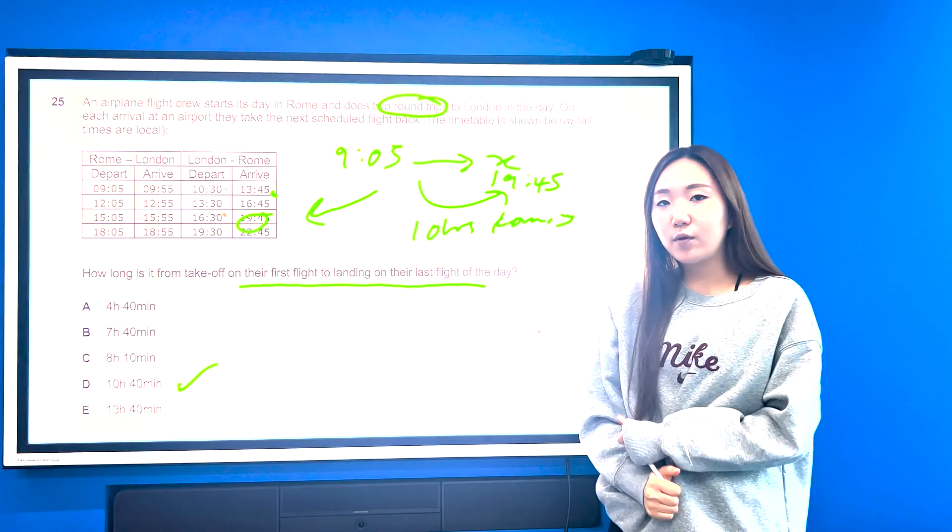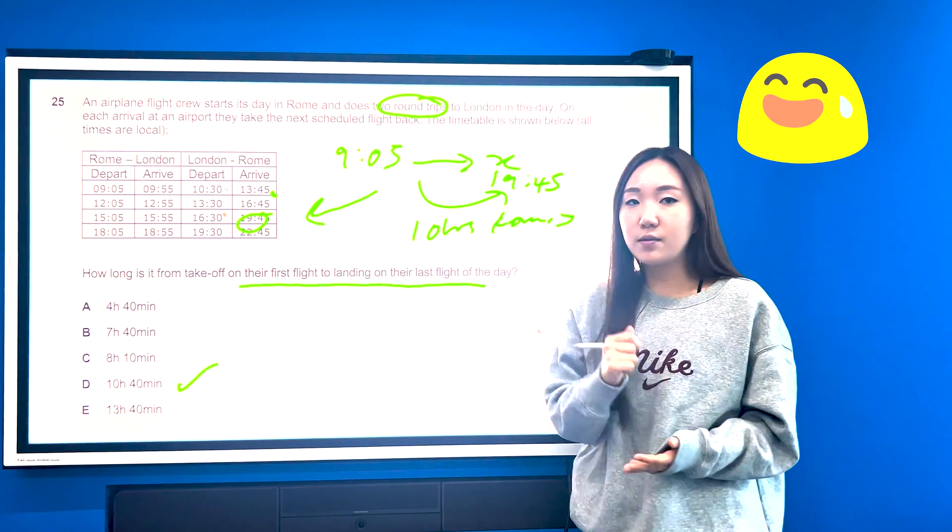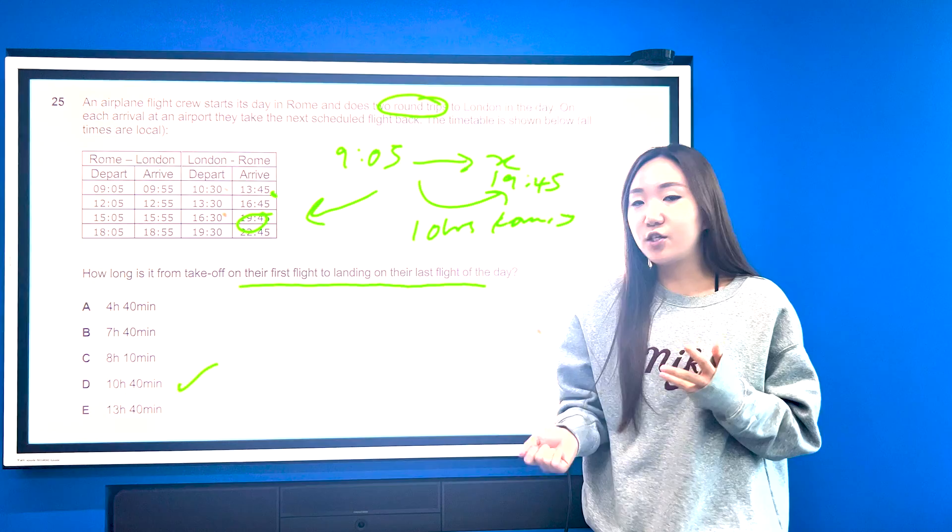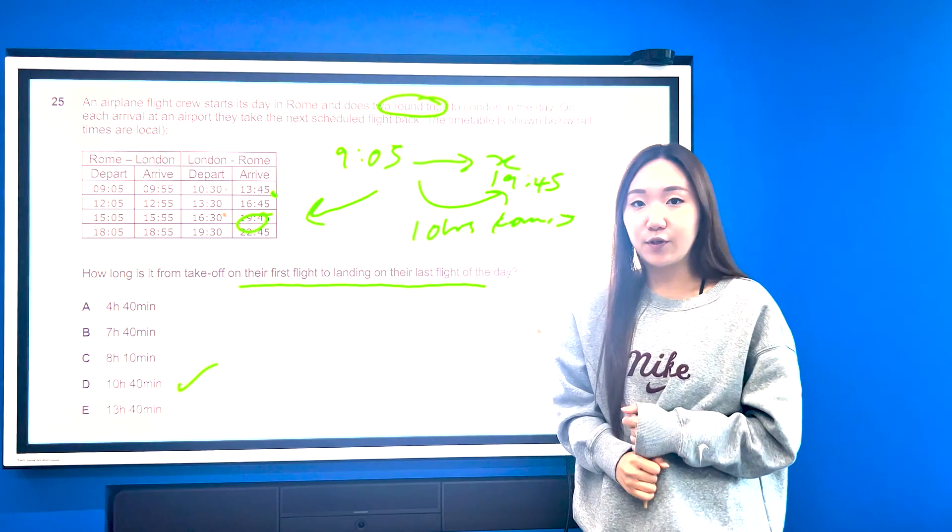So time constraint ones, if you're comfortable with time zones, times, things like that, again these should be pretty nice, easy ones to jump through.